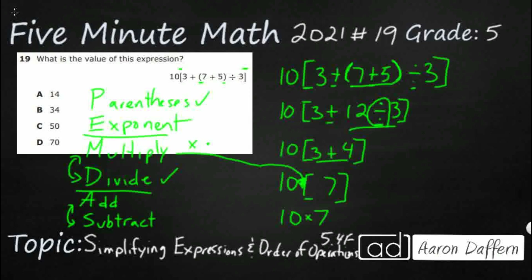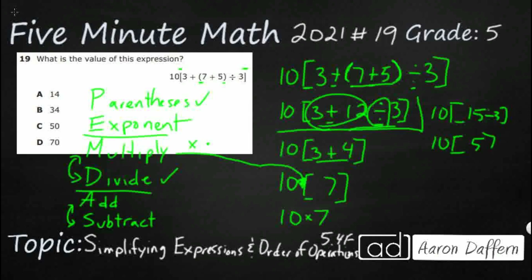Now watch what happens if we did the wrong thing. What if I did 3 plus 12 first? That would be 15 divided by 3, which would give us 10 bracket 5, and you notice how that would give me 50 — which is a choice, but it's the wrong answer. I need my answer of D, 70.